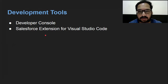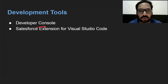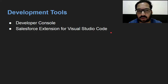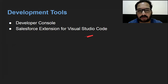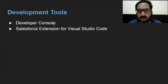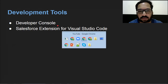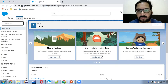This is the last slide of this video. Here you can see we can use two development tools to write Apex code. First is Developer Console, and second is Salesforce Extension for Visual Studio Code. Right now I'm going to show you how to use Developer Console, because Visual Studio Code needs to be installed explicitly, but Developer Console is built in with your Salesforce org.